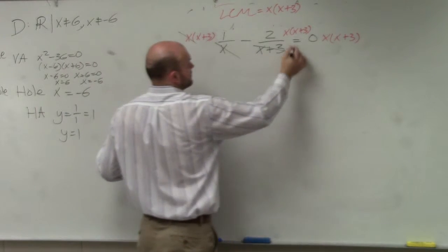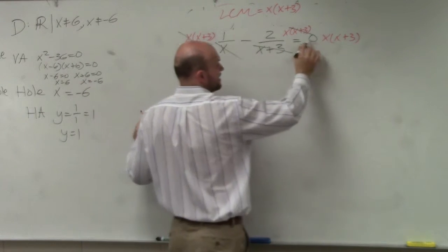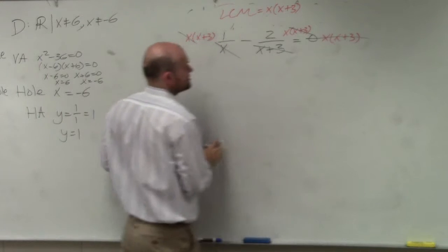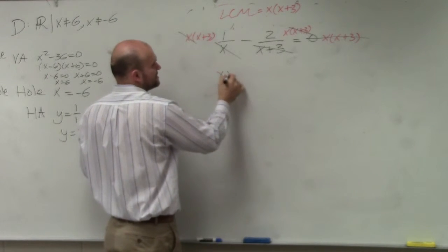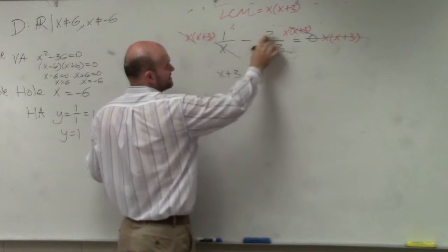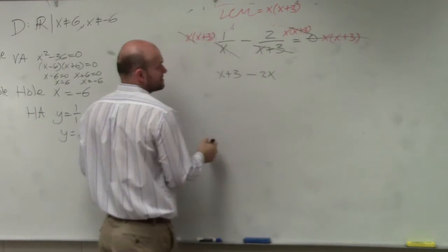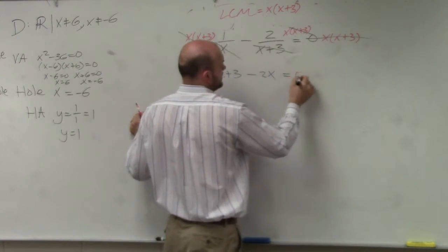X's divide out. X plus 3's divide out. And then 0 times that is obviously always going to be 0. So therefore, I'm left with x plus 3 times 1, which is x plus 3, minus negative 2 times x, which is negative 2x, equals 0.